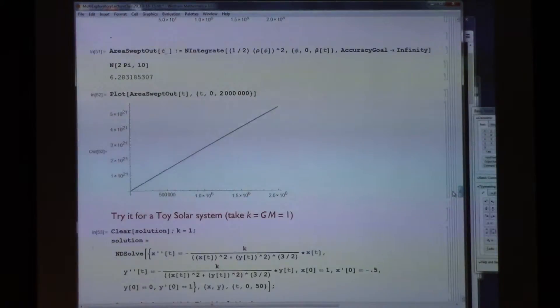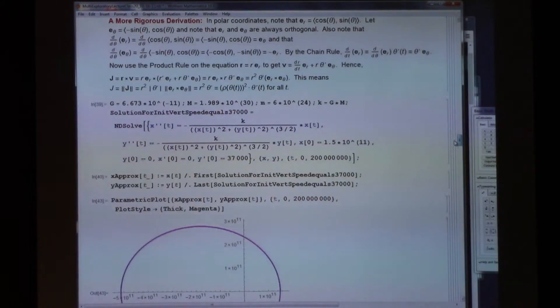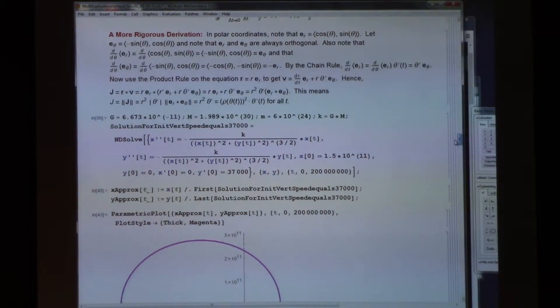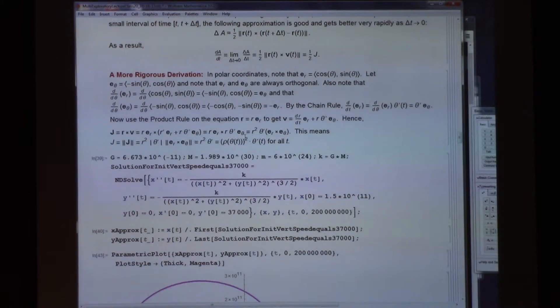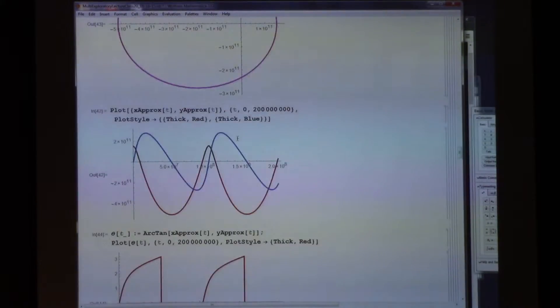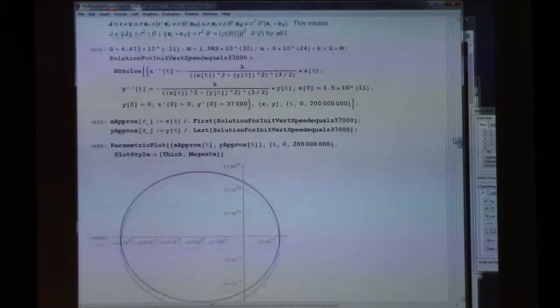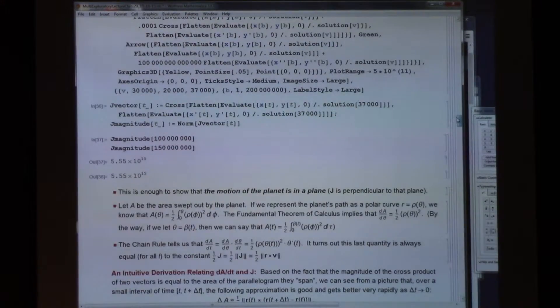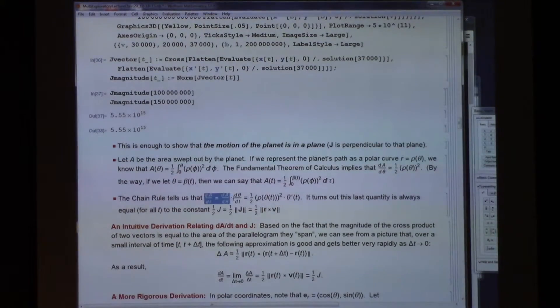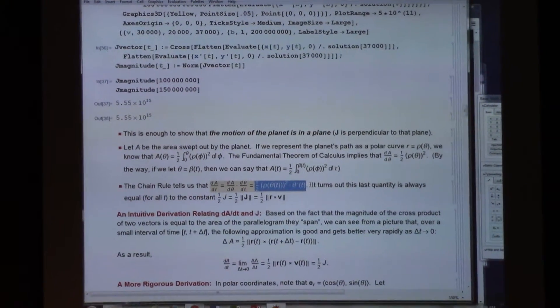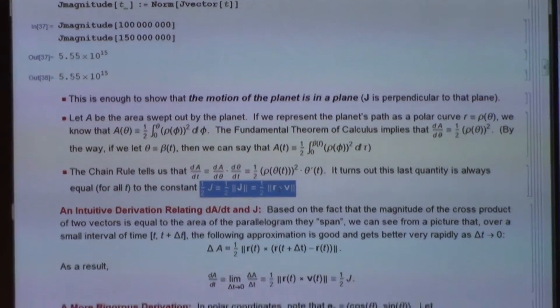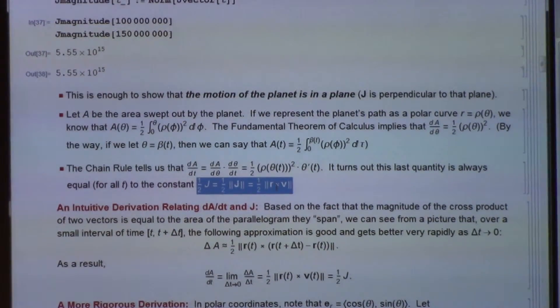Anyway, we did derive, believe it or not, the second law here. Where is the final conclusion? We proved that the equal areas were swept out at equal times. I think the conclusion ultimately was that dA dT equals this. dA dT was that. But that thing was equal to the magnitude of j, one half of j, which is constant. So, in essence, we did prove it if you believe the word here.